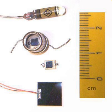PN photodiodes are used in similar applications to other photodetectors, such as photoconductors, charge-coupled devices, and photomultiplier tubes. They may be used to generate an output which is dependent upon the illumination, for measurement and the like, or to change the state of circuitry for control and switching, or digital signal processing. Photodiodes are used in consumer electronics devices such as compact disc players, smoke detectors, medical devices and the receivers for infrared remote control devices used to control equipment from televisions to air conditioners. For many applications either photodiodes or photoconductors may be used.